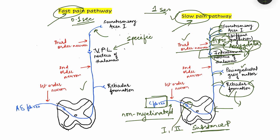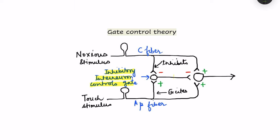For modulation of pain, the key area is the dorsal horn of the spinal cord, also known as the substantia gelatinosa. In this area there is an interneuron — in addition to the first order neuron synapsing with the second order neuron — and there are mechanisms by which this interneuron is activated and inhibits the transmission of impulse into the second order neuron, effectively closing the gate.